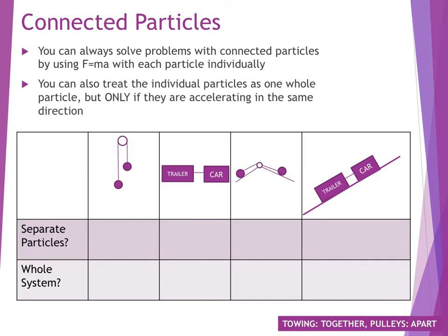The way that two particles could be connected could either be a trailer and a car, connected together and pulling in the same direction, or it could be two things on a pulley, in which case they're going to be going in different directions. The key thing to think about is that we can only treat them as a whole particle if they're accelerating in the same direction. If the two things are moving in different directions, then you can't look at it as one individual particle. Just pause the video now and have a think about that in the diagrams below, could you treat them as separate, or could you treat them as a whole system, or could you do both?